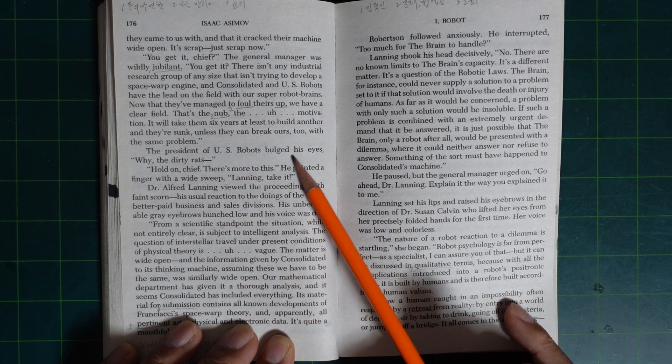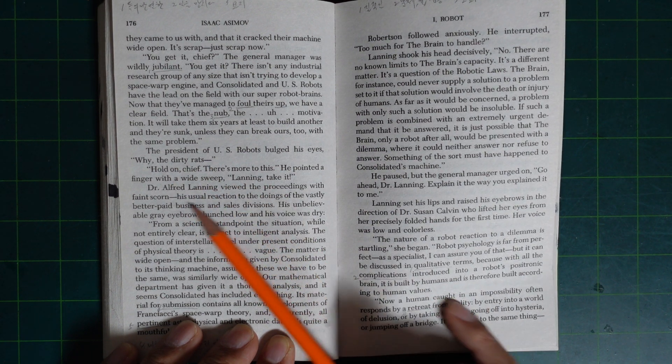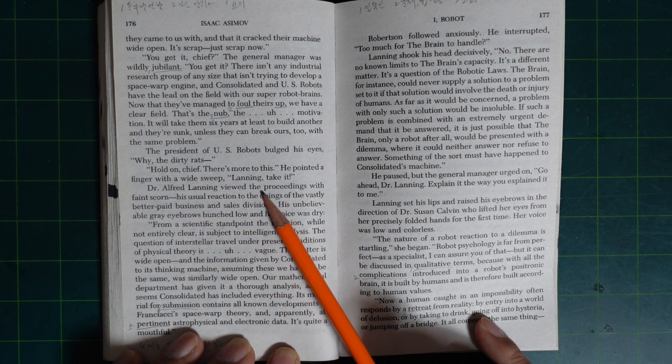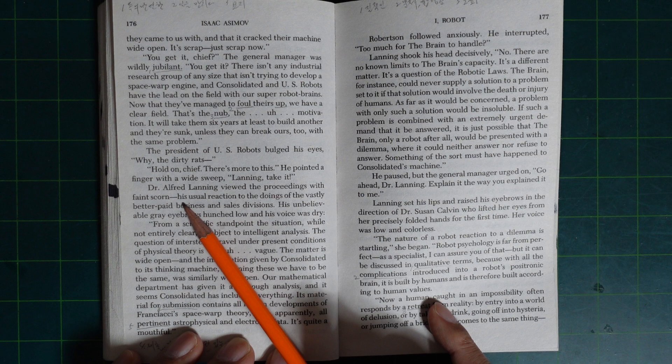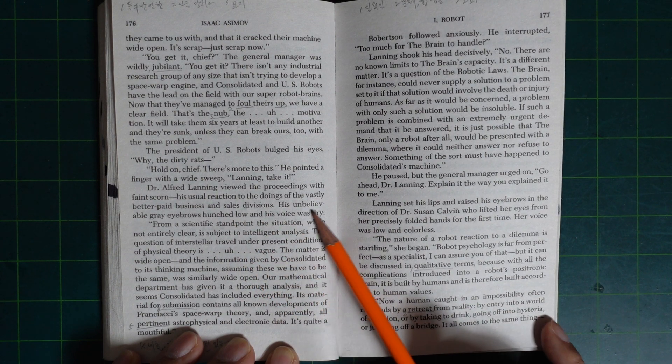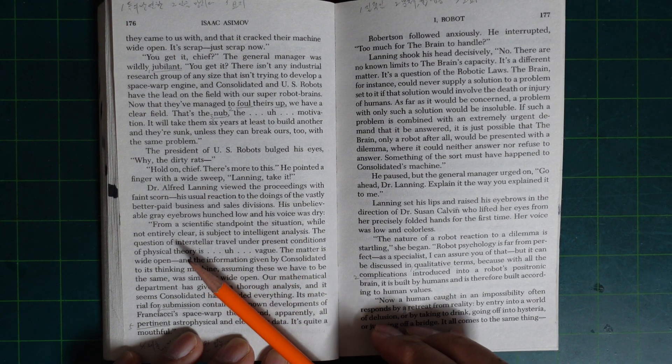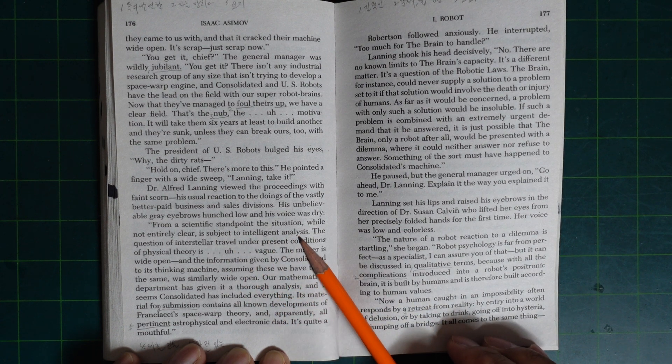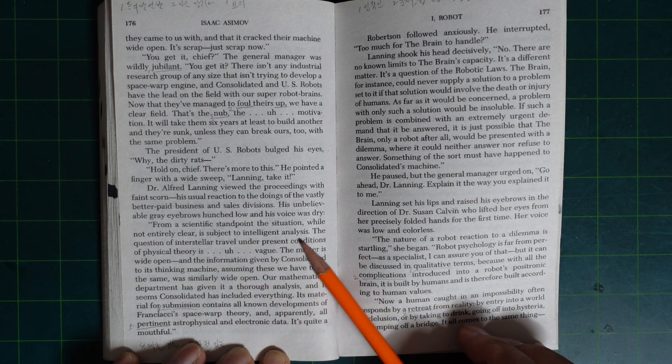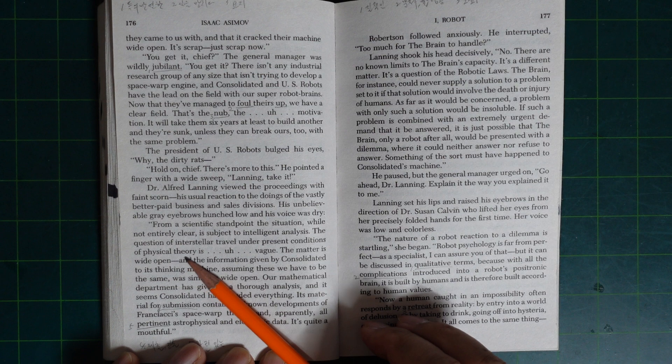The president of U.S. Robot bulged his eyes. Why, the dirty lowdowns. Hold on, Chip. There's more to this. He pointed a finger in a wide sweep. Lenning, take it. Dr. Alfred Lenning viewed the proceedings with faint scorn, his usual reaction to the doings of the vastly better paid business and sales division. His unbelievable gray eyebrows hunched low and his voice was dry. From a scientific standpoint, the situation, while not entirely clear, is subject to intelligent analysis.